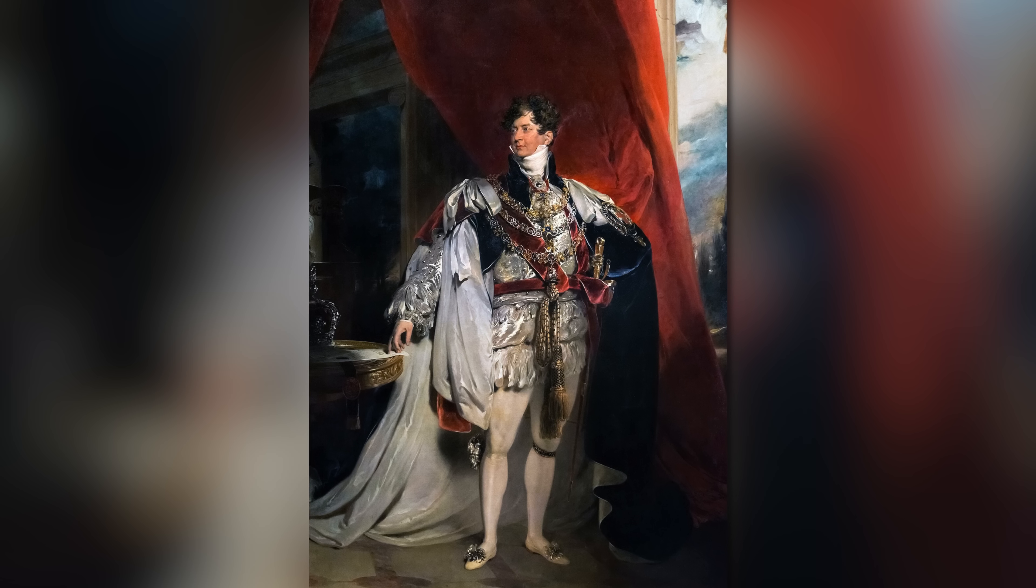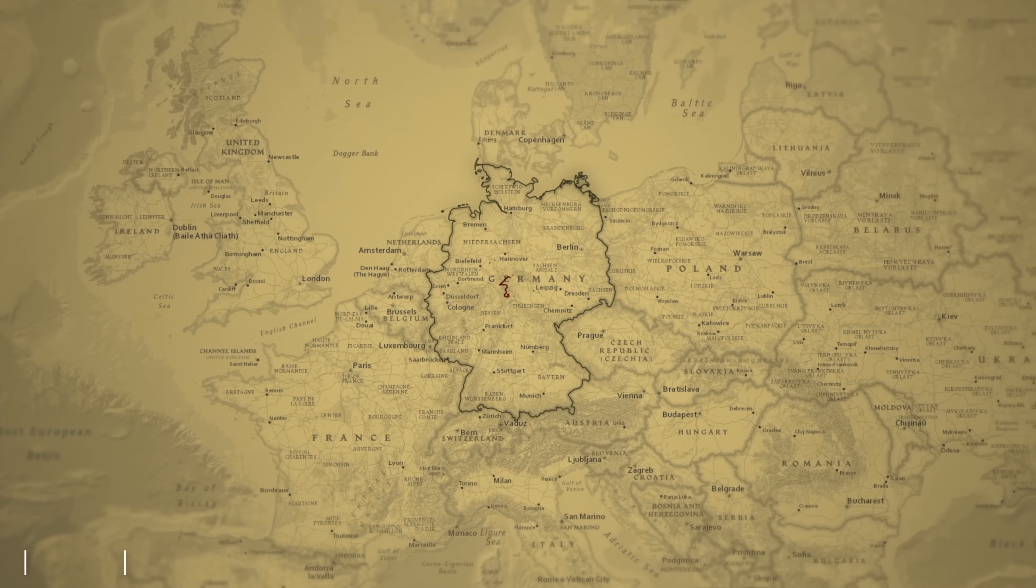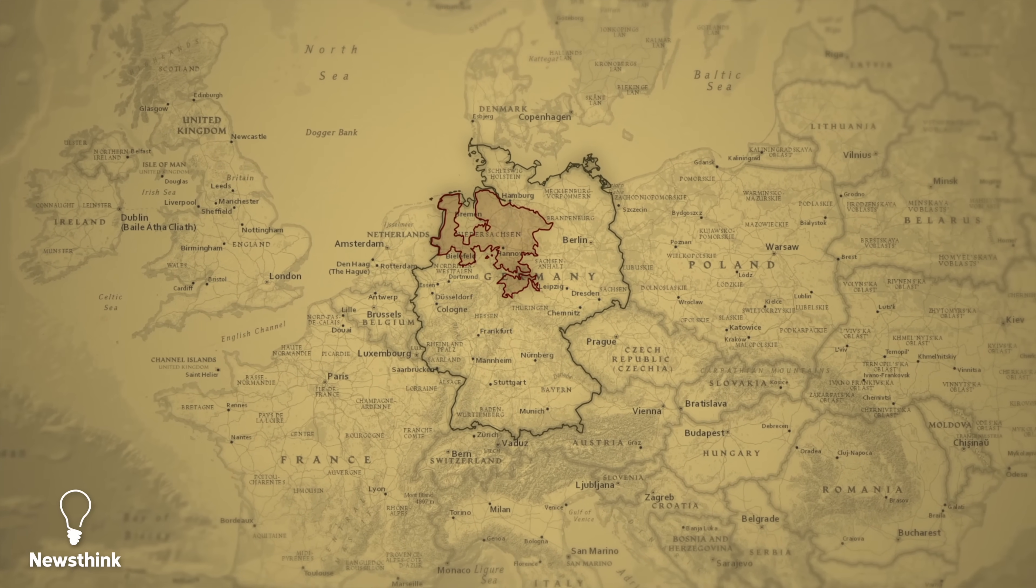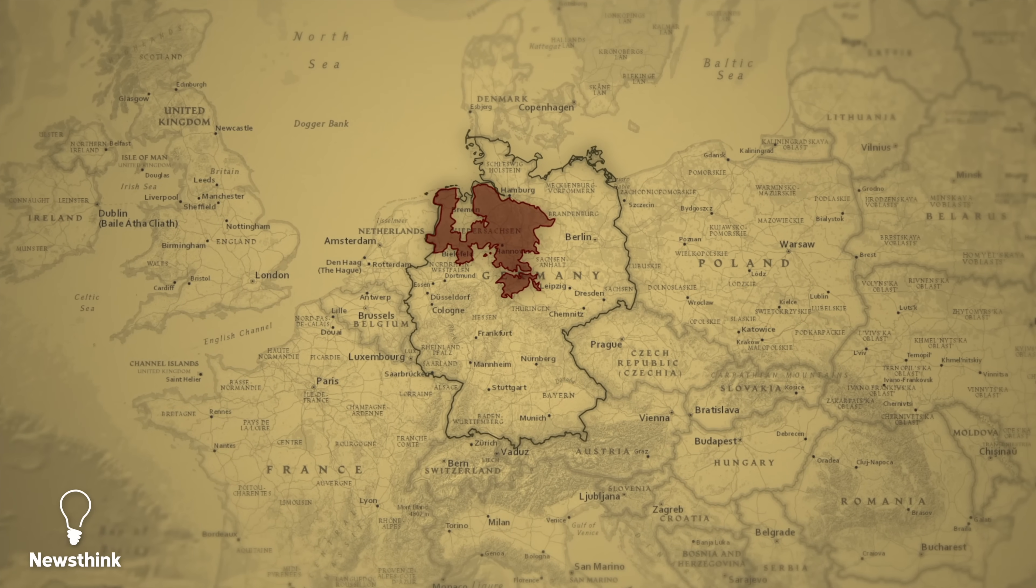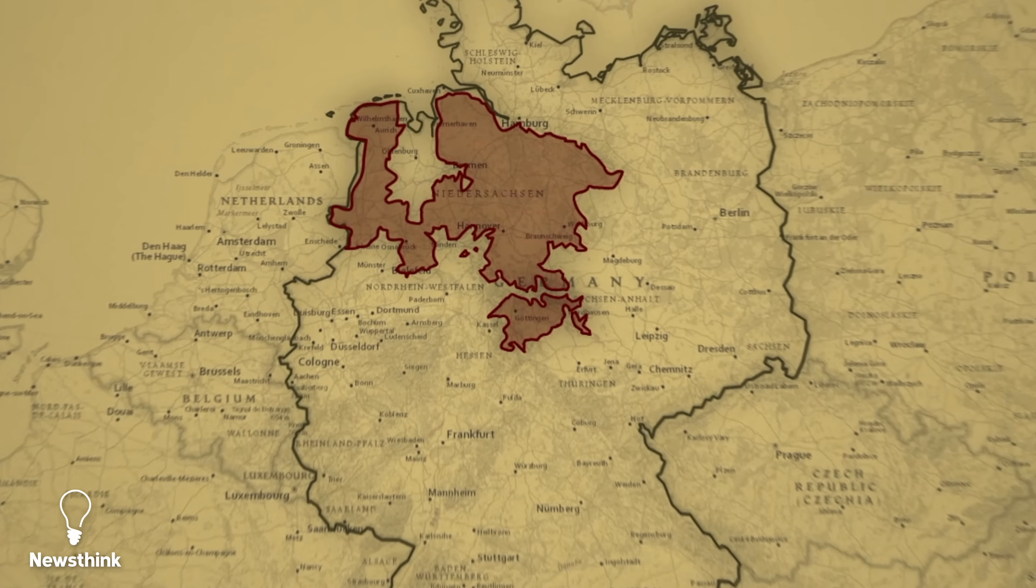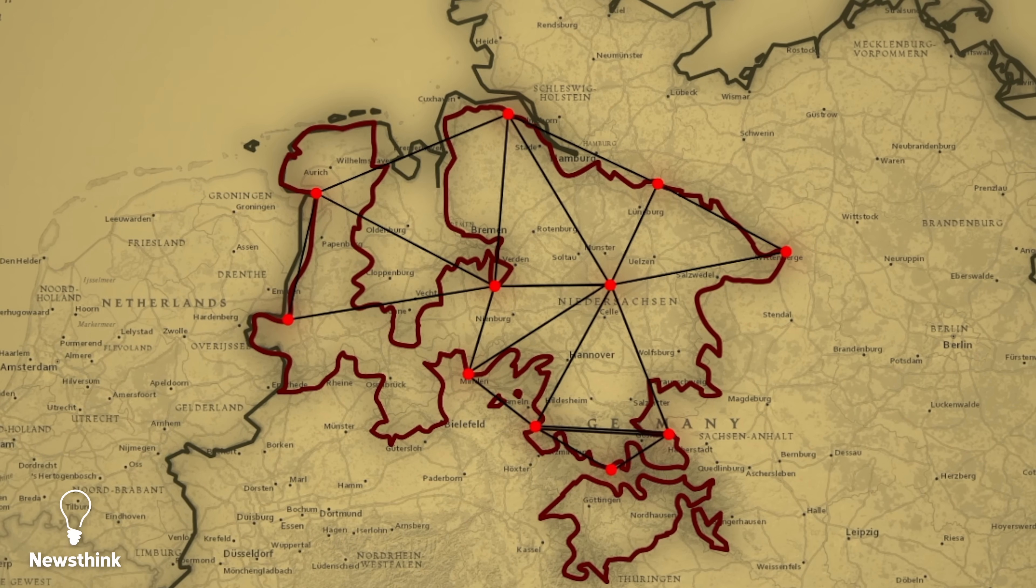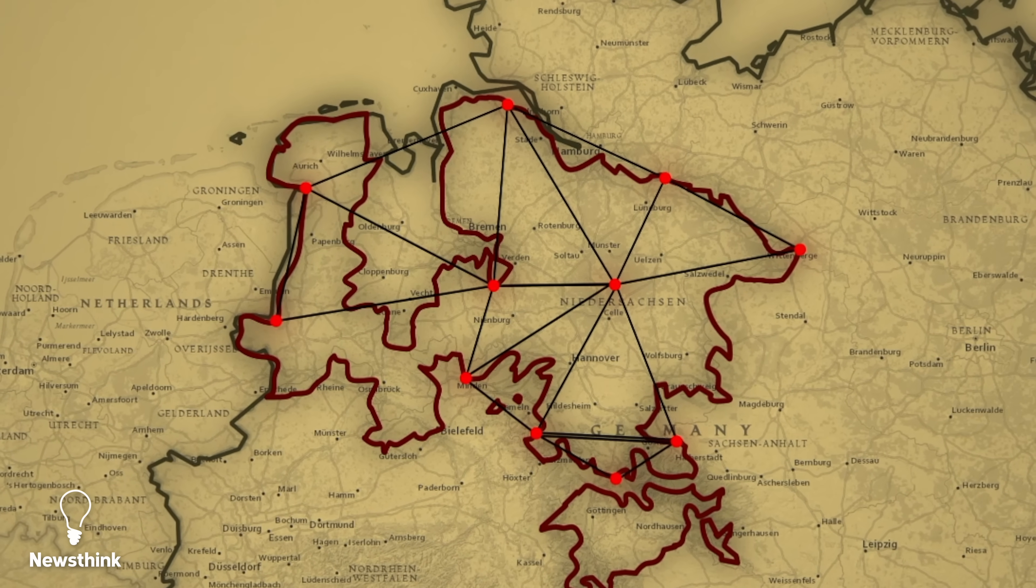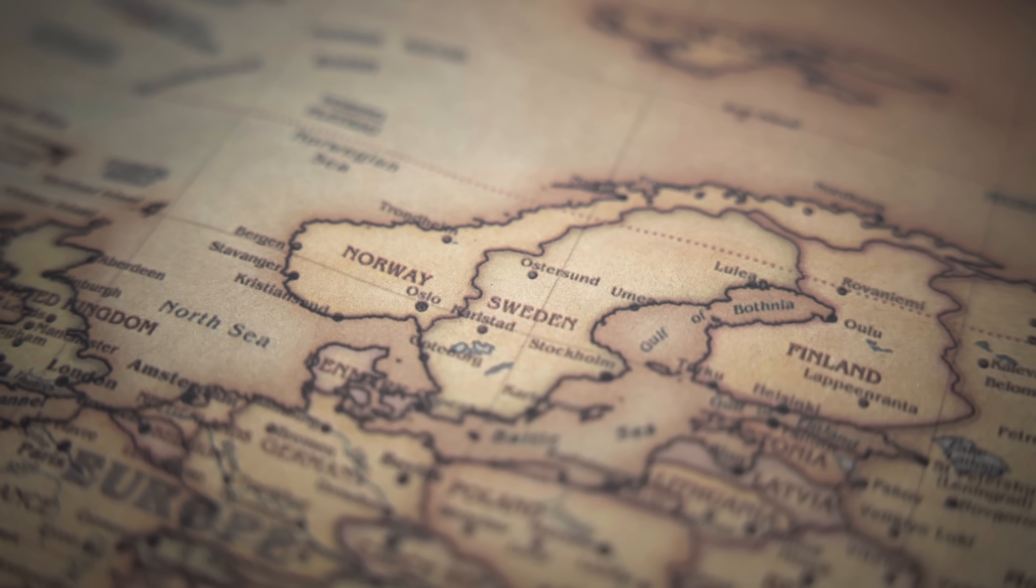In 1816, King George IV entrusted him with the monumental task of surveying the Kingdom of Hanover, a hilly region of approximately 15,000 square miles in northern Germany ruled by the British Crown. To accomplish this ambitious project, Carl employed triangulation. Starting with a precisely measured baseline, he calculated angles and distances to map the region accurately using a network of interconnected triangles, laying the foundation for modern mapmaking.